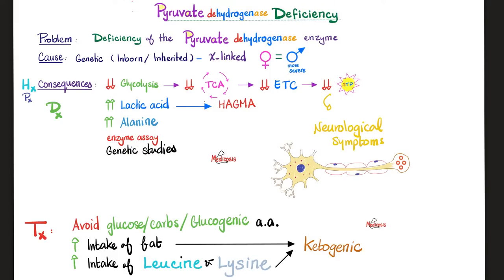What are the consequences of pyruvate dehydrogenase complex deficiency? Say goodbye to the step between glycolysis and making acetyl-CoA. Less energy, because I'm less able to go to the TCA cycle. Neurological symptoms result. Pyruvate is stuck and will go somewhere else — such as lactic acid, causing high anion gap metabolic acidosis — or alanine, leading to elevated alanine in the blood.